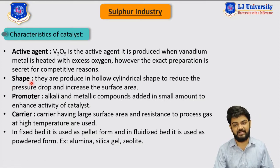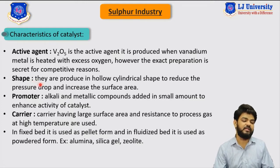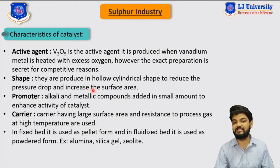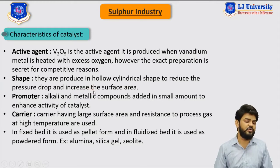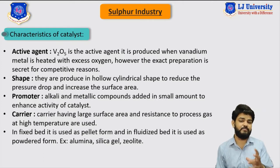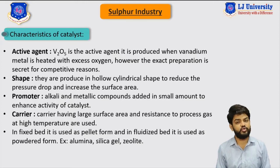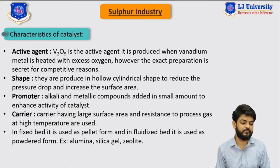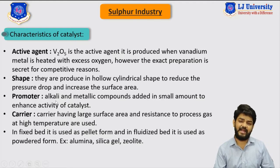The second characteristic is the shape of the catalyst. Vanadium pentoxide catalysts are produced in a hollow cylindrical shape to reduce the pressure drop and increase the surface area. This cylindrical shape provides a higher surface area and also reduces pressure drop in the reactor, or what we can call the double-stage reactor.